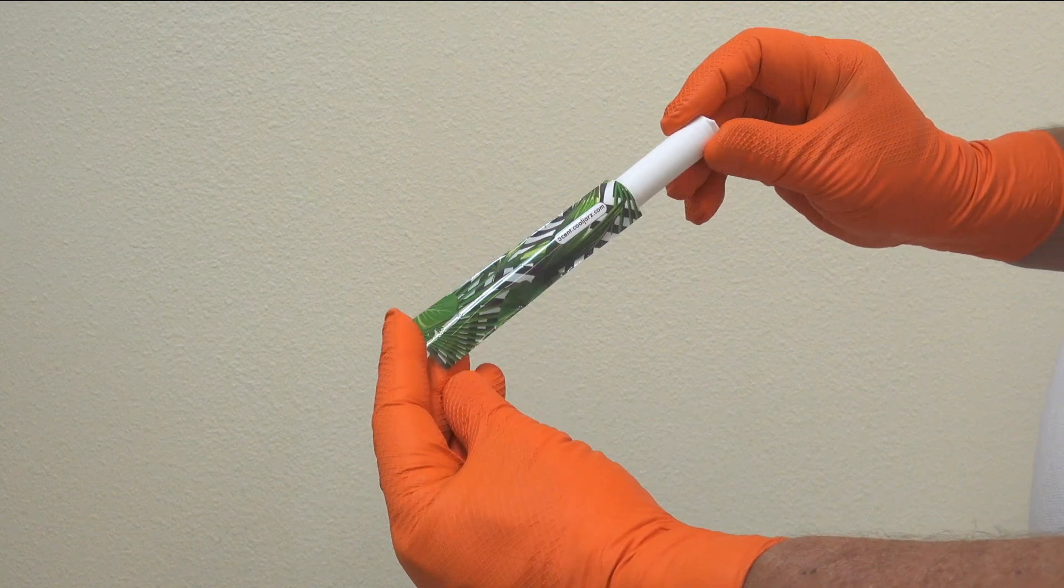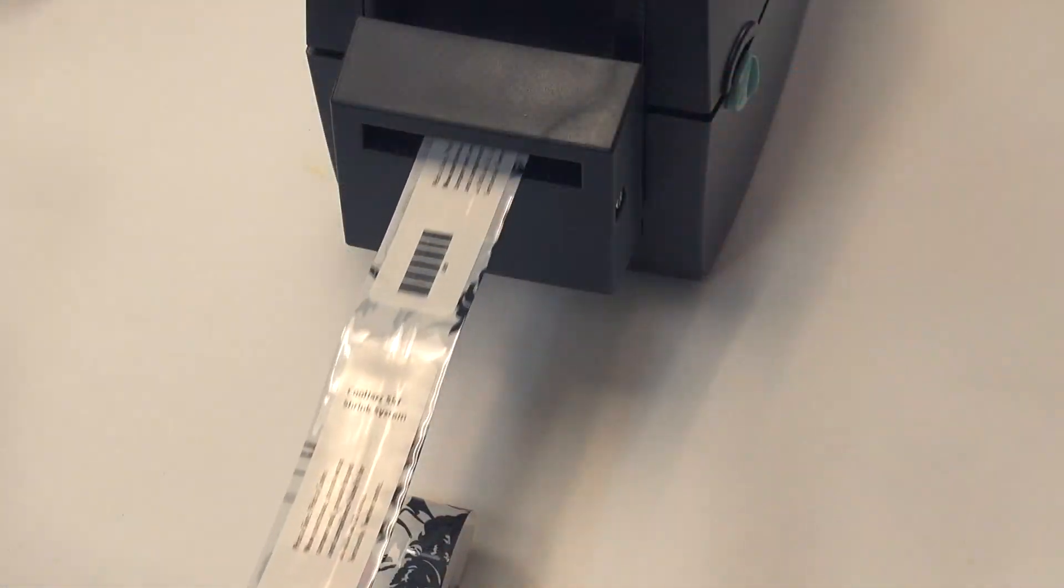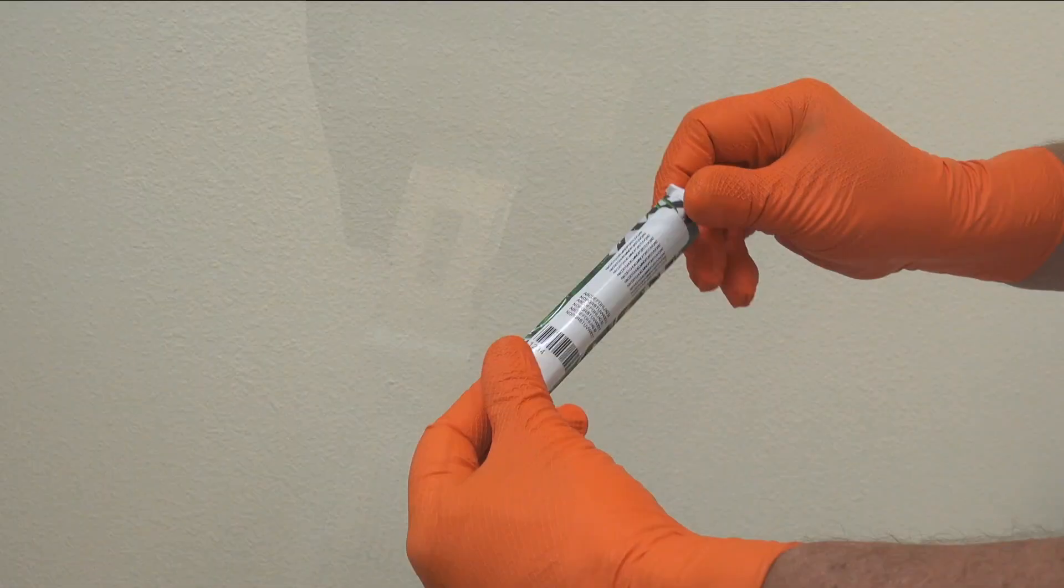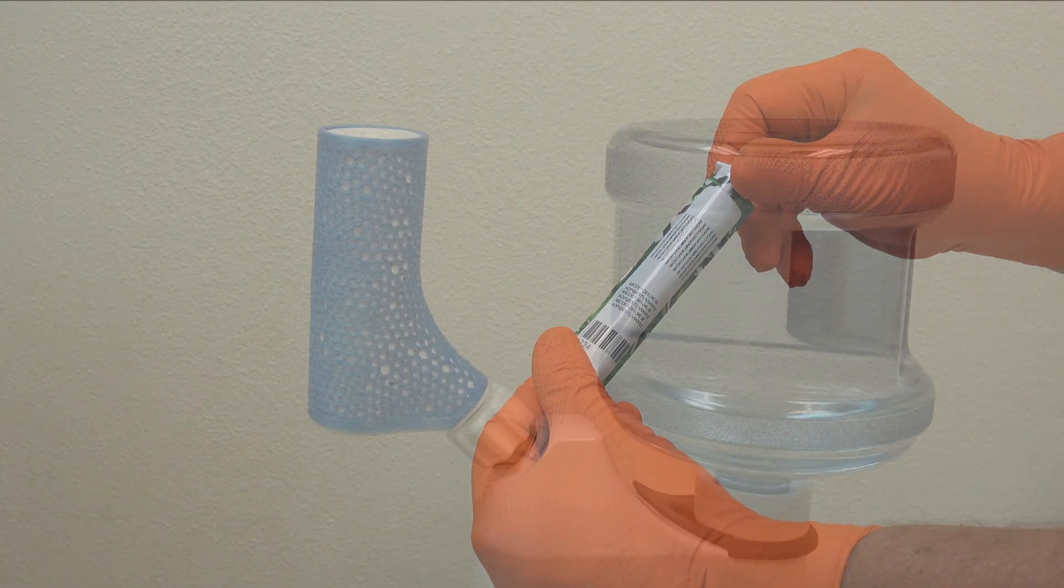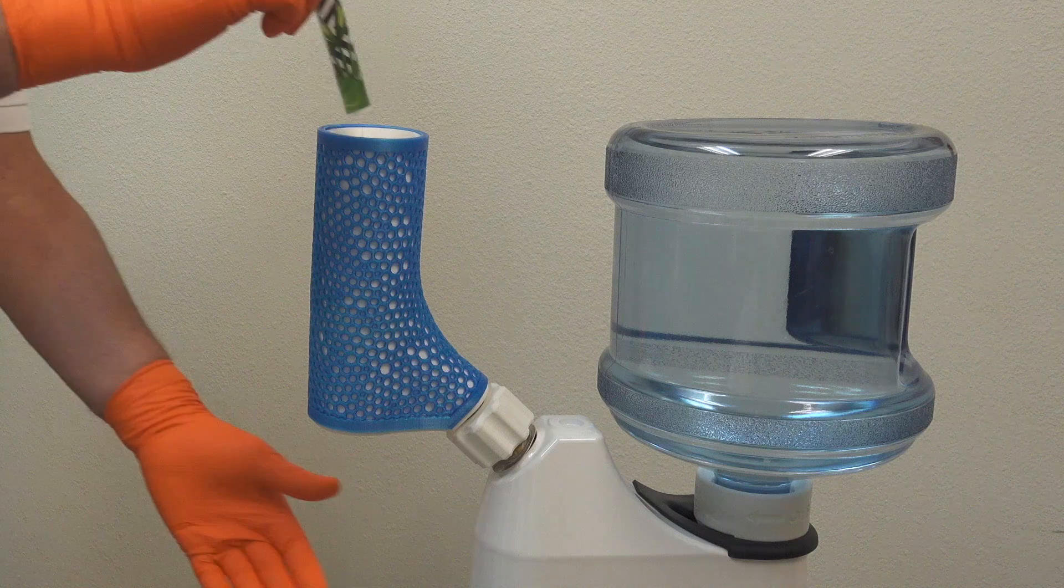Step 1. Place a branded shrink-sleeve, which you've pre-printed with compliance text from our optional thermal printer, over tube. Step 2. Drop tube through SST system.